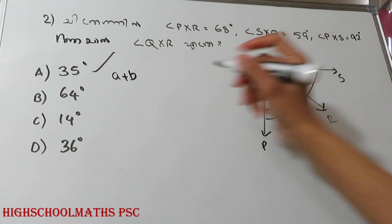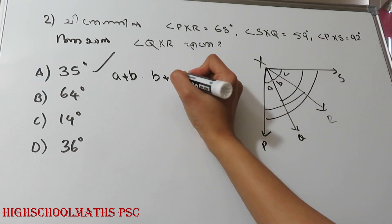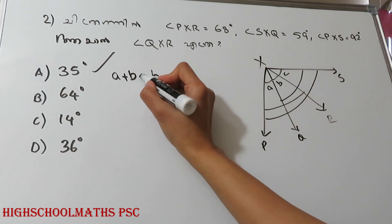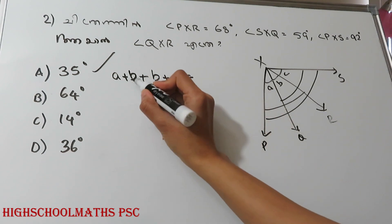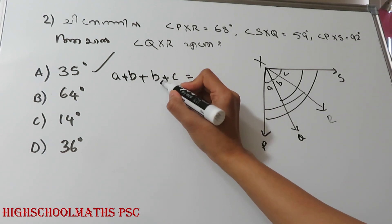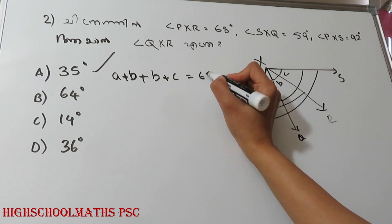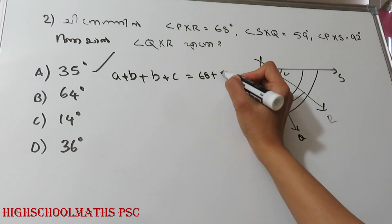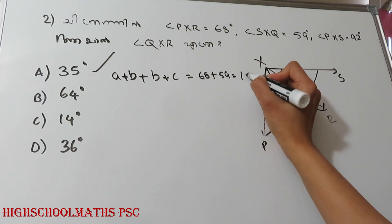If you have b plus c, it is 80. If you add a plus b plus c, it is 68 plus 59, which is 127.